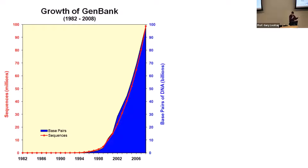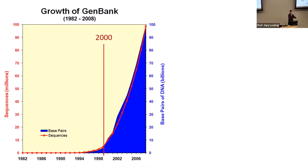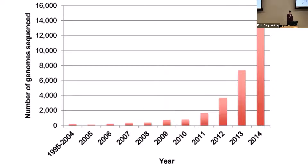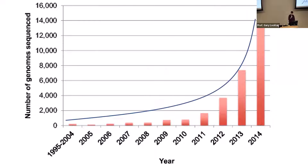The growth of GenBank, a major bioinformatics database, shows exponential growth from 2000 to 2008. As of 2021, there are 215 million protein sequences and data for 115,000 organisms. The number of genomes sequenced over time shows an exponential curve, and by 2022 there are even more genomes sequenced. Creation scientists must make use of this data.